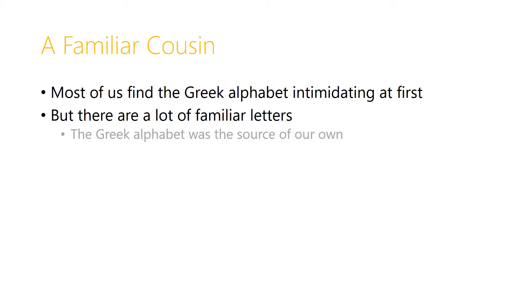The alphabet that Greek uses is sort of a familiar cousin to our Latin alphabet that's used in English. There are a lot of familiar letters, and the Greek alphabet was actually the source of our own, which is why we have those overlaps. The Greek alphabet was adapted by Latin speakers to write the Latin language, and then that Latin alphabet was in turn adopted for Greek and other European languages.